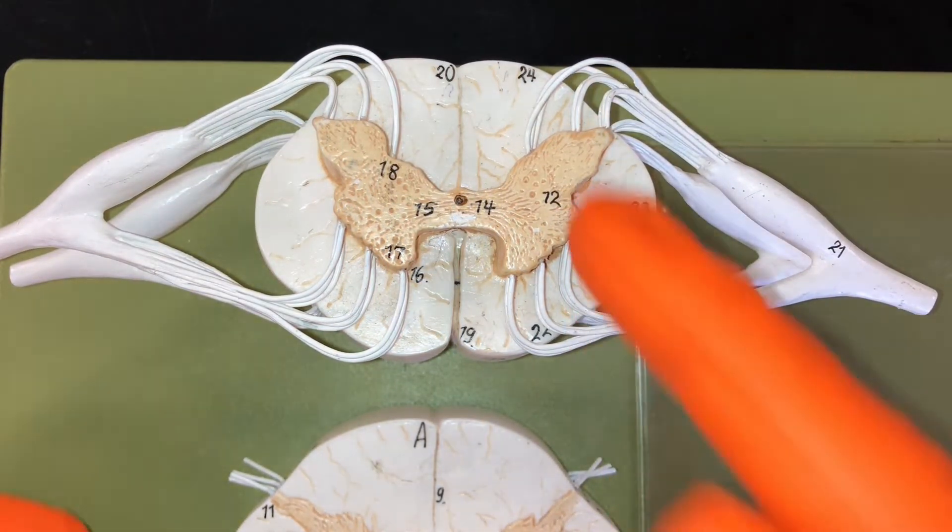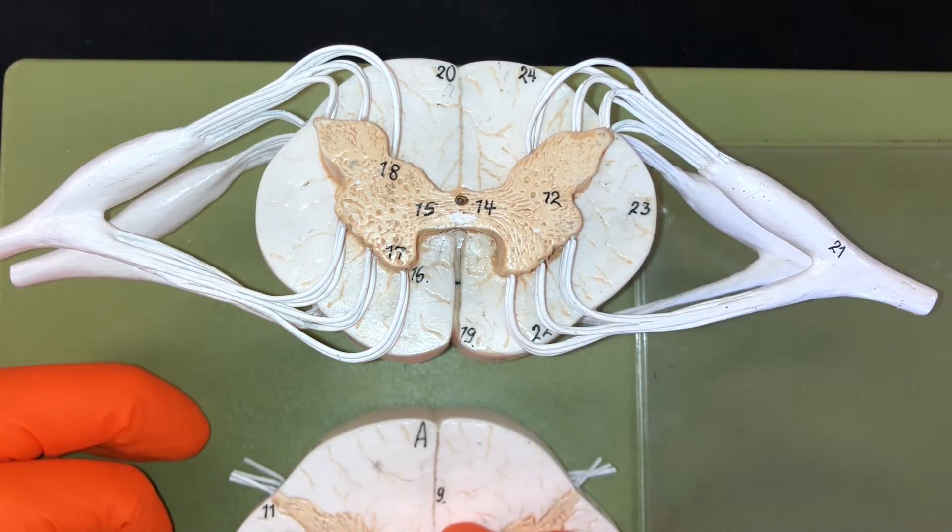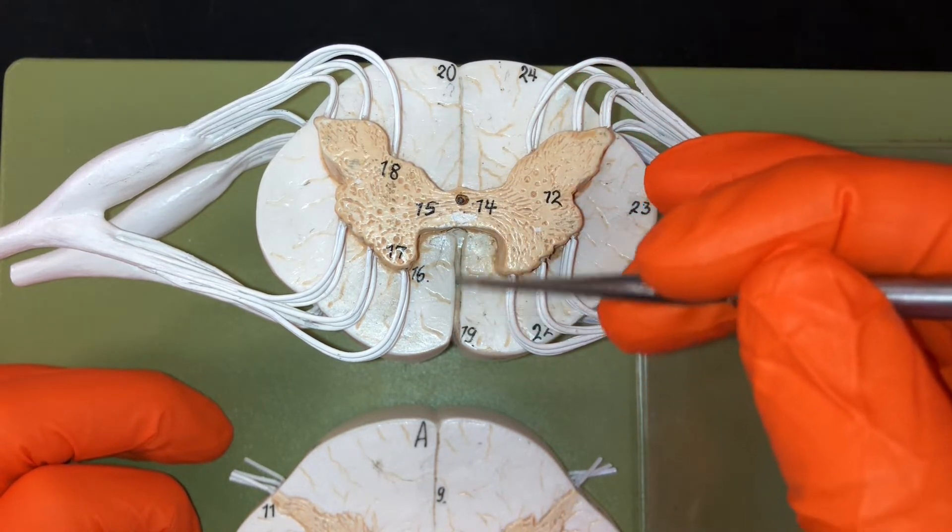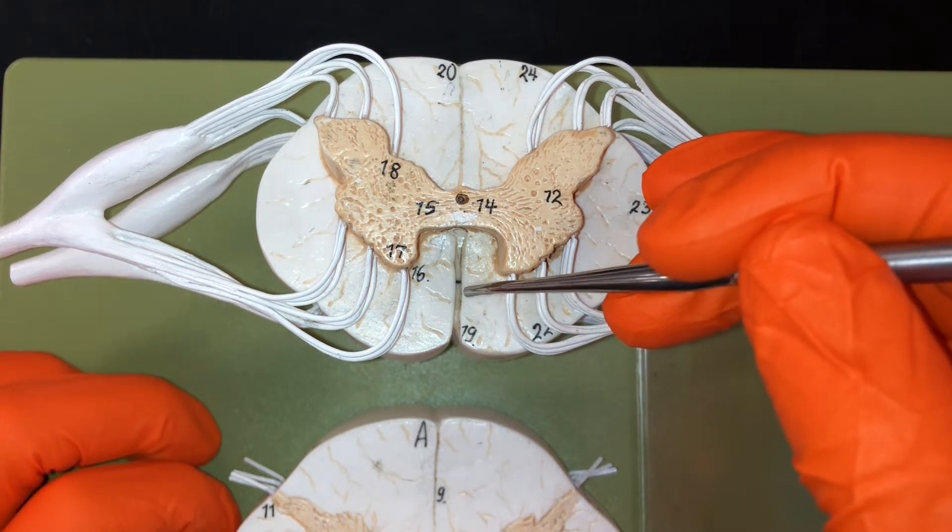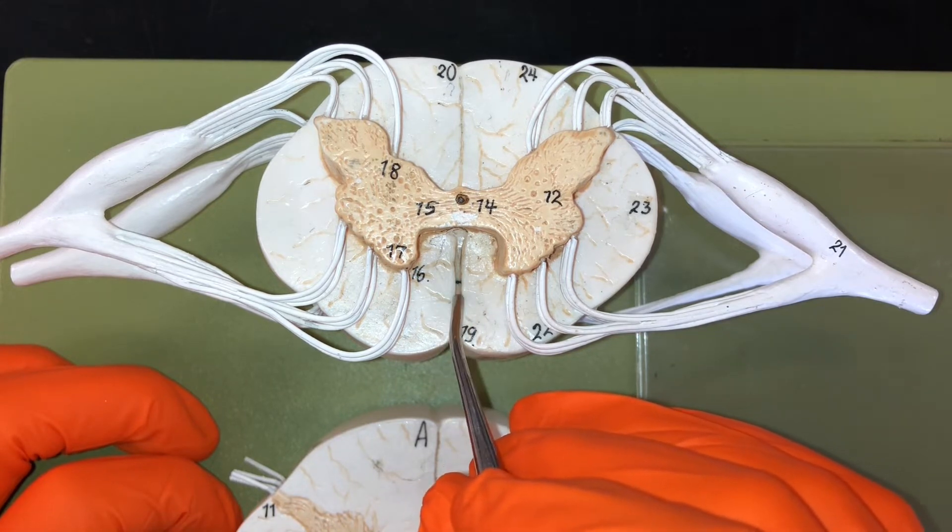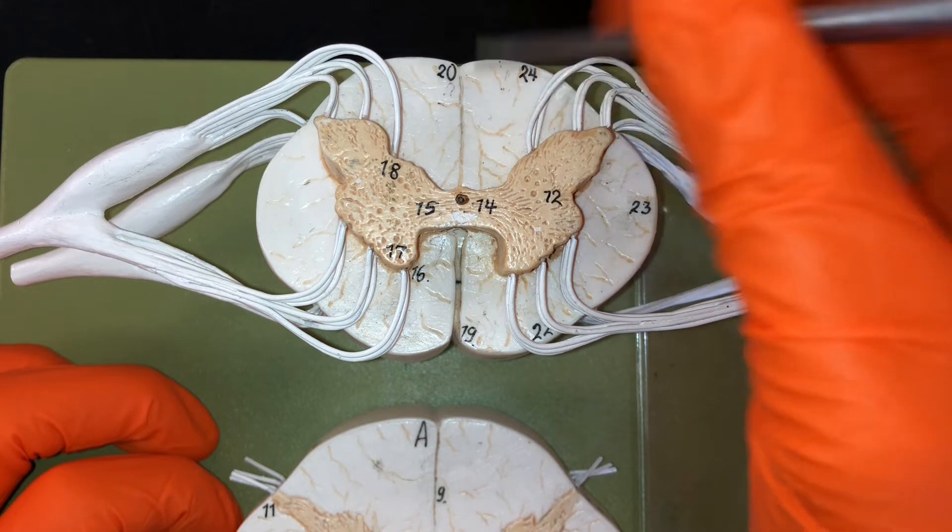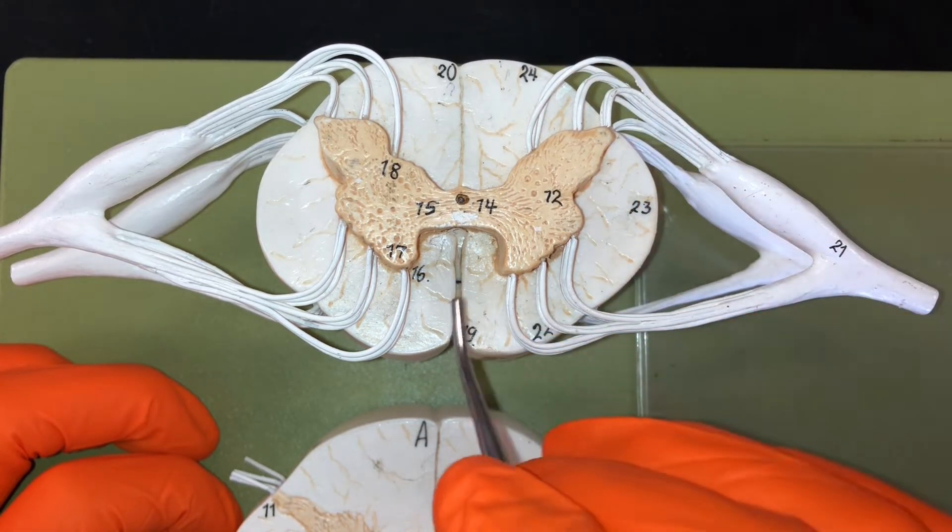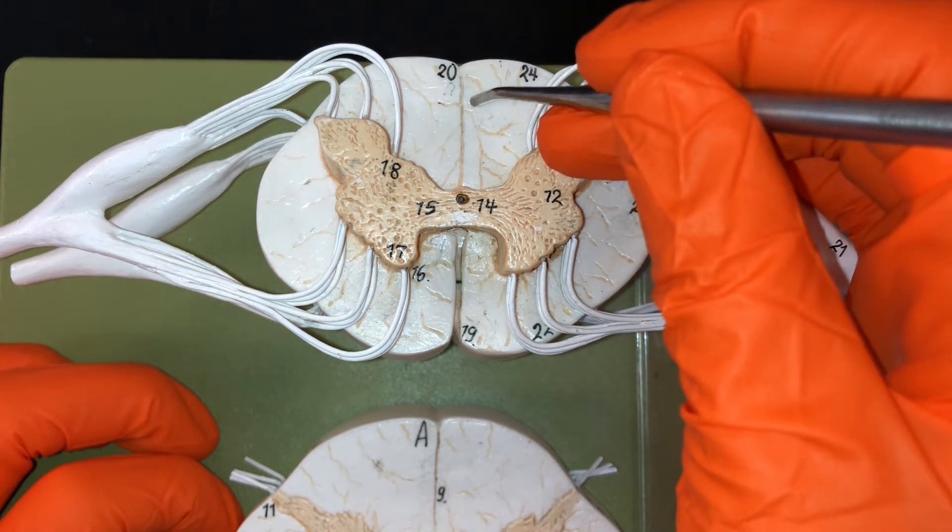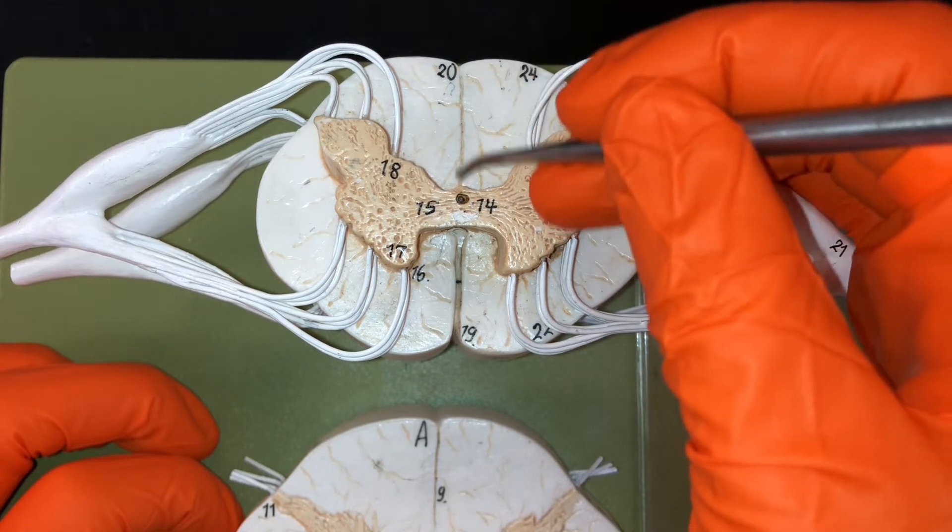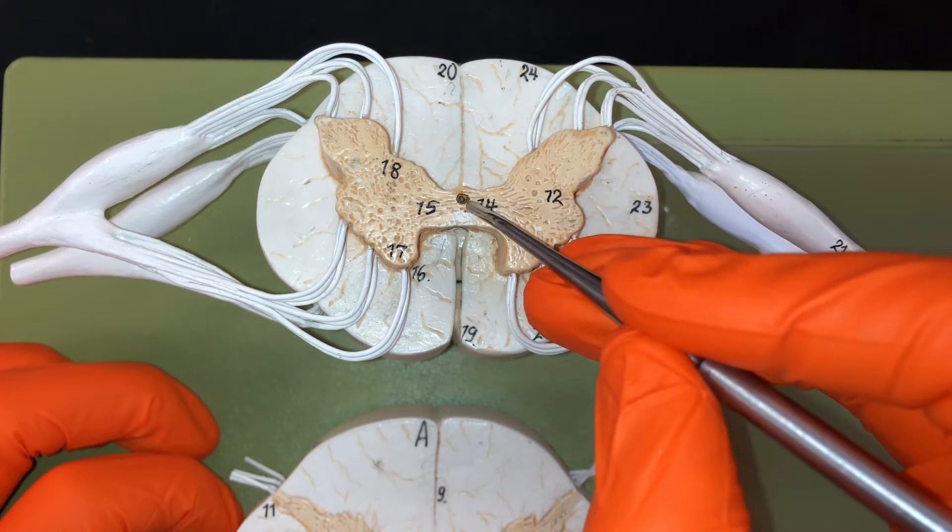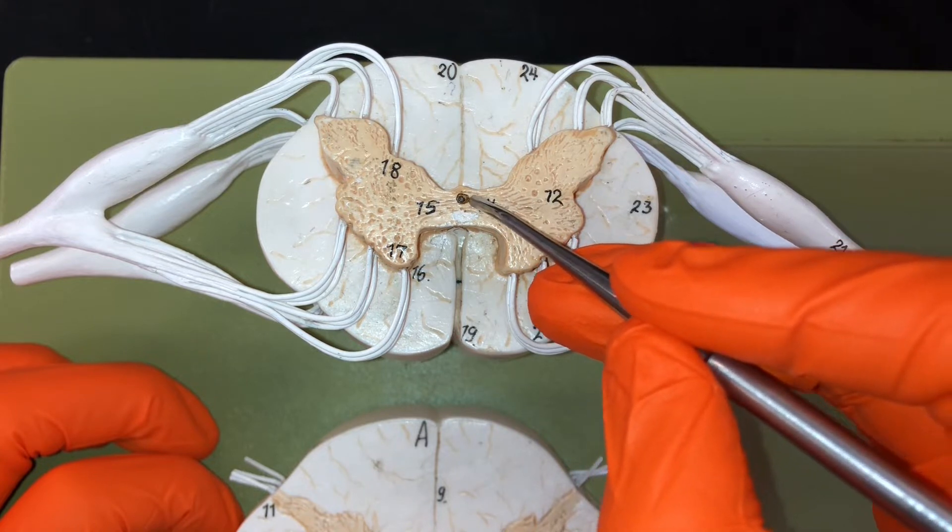I like to make sure that we understand what direction we're looking at, and to help us with that, we need to look at these grooves here. This groove right here is called the anterior median fissure. A fissure is going to be a deep groove, and you'll notice that this is wider than the groove we have here. So if you see a deeper, wider groove, you know you're looking at the anterior side. This groove right here is called the posterior median sulcus. Right here in the center is the central canal.